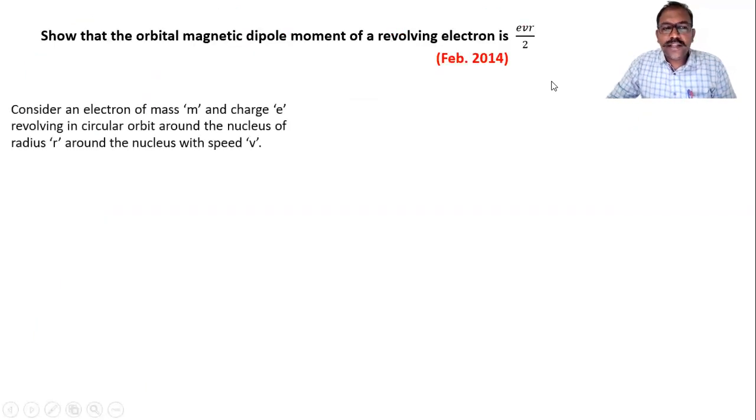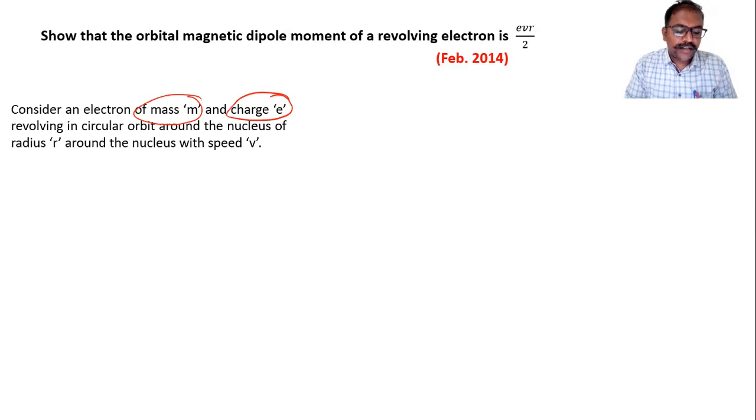So we consider one electron whose mass is M and charge E moving in a circular orbit around the nucleus with the radius R and with the speed V.